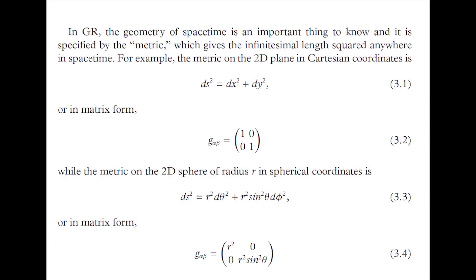The mathematical object that contains the geometry for this curved spacetime is the metric, which tells you how to make spatiotemporal measurements everywhere in spacetime. So if you have the metric, you can tell where objects in free fall will go — that is, you can find the geodesics.